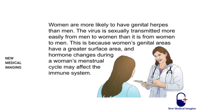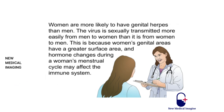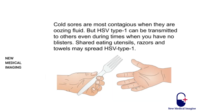Women are more likely to have genital herpes than men. The virus is transmitted more easily from men to women because women's genital areas have a greater surface area, and hormone changes during the menstrual cycle may affect the immune system. Having many sexual partners is another risk factor — each additional partner increases your chance of infection. Cold sores are most contagious when oozing fluid, but HSV type 1 can also be transmitted when there are no blisters. Shared eating utensils, razors, and towels may spread HSV type 1.